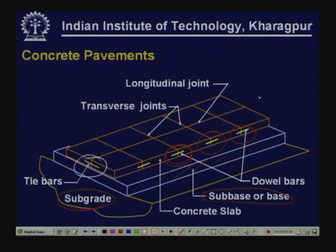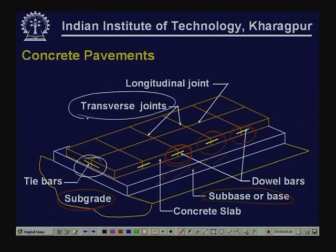The longitudinal joint separates the panels placed in different lanes, and there will be transverse joints at a selected spacing. The spacing at which transverse joints are to be provided and the need for a longitudinal joint will be a function of various conditions. In general, the concrete pavement will have subgrade, granular base, concrete slab, longitudinal joints, transverse joints, and it may have dowel bars across transverse joints and tie bars across longitudinal joints.